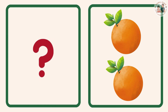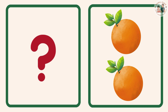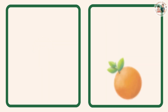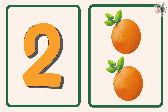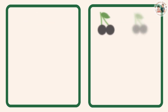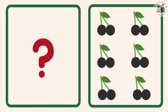How many oranges here? Five? I don't know. One, two. Two oranges. Yes. Now find this number. Six cherries here.